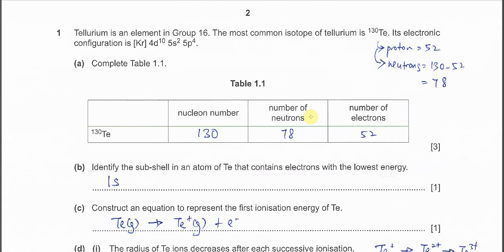Okay, tellurium is given in this question. The mass number is 130 and you must get the proton number from the periodic table, which is 52. So we can get the neutron number now, 130 minus 52, we get 78. So the nucleon number, which is the mass number, so it's 130. Neutron number is 78. Because the tellurium given is neutral and the electron number must be the same as proton number, 52 also.